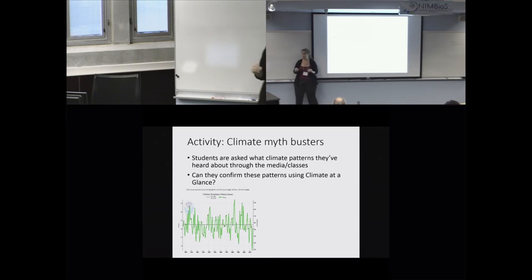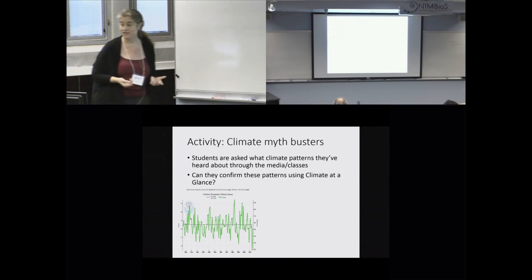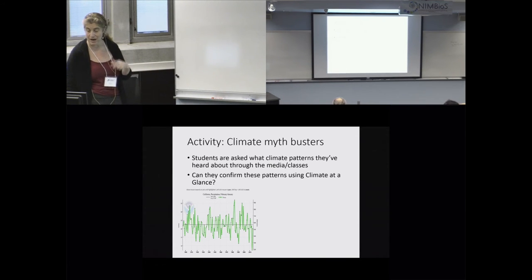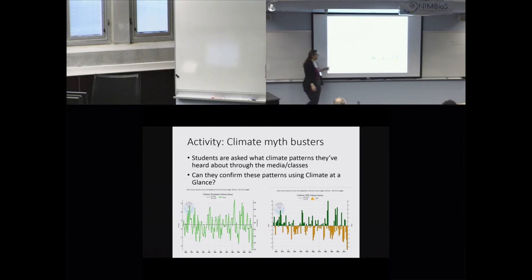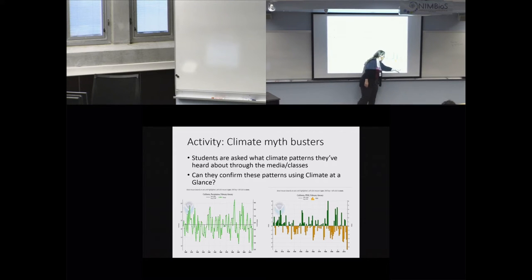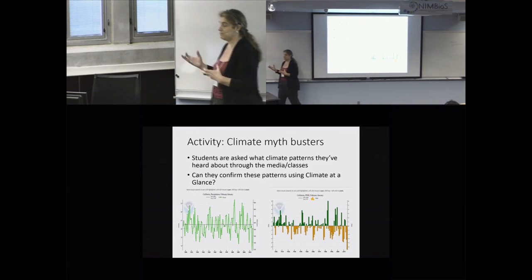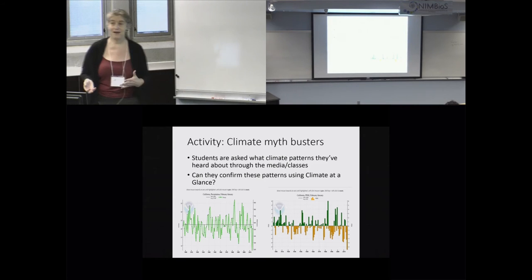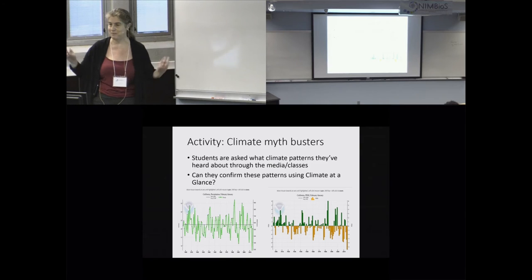Climate is really complicated — it may not be year-long precipitation but something more subtle, like when it rains. If you look at a drought index for California instead, you can see it has been very dry for the past few years and it does look like the worst drought on record. Students are confronted with messy real data that sometimes confirms what they've heard and sometimes doesn't, and we try to discuss that openly.